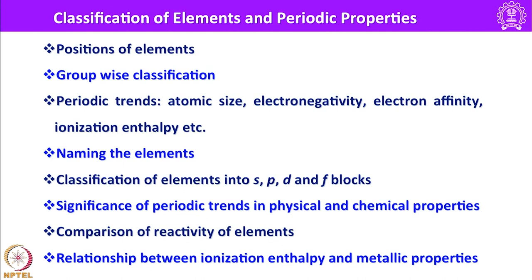Under this we shall focus on some key points. First, let us understand the position of elements and how elements find a position in a particular place in the periodic table, and how the classification has been carried out group-wise as well as row-wise. Then we look into the periodic trends — atomic size, electronegativity, electron affinity and ionization enthalpy.